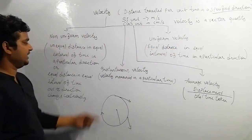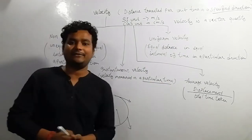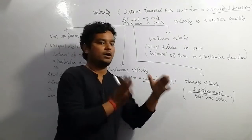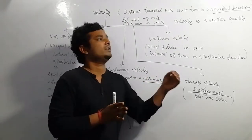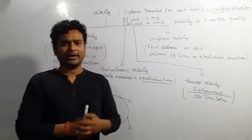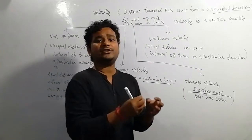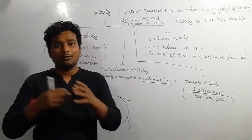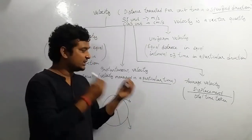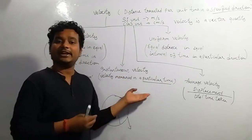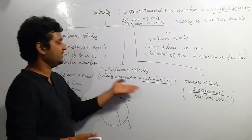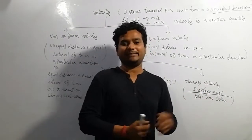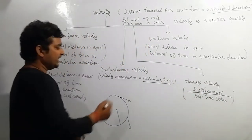Instantaneous velocity is the velocity measured at a particular time instant. If a body is moving with different velocities over one hour, the velocity at exactly 5 seconds is the instantaneous velocity at that instant. Similarly, the velocity at exactly 10 minutes is the instantaneous velocity at that point. That is called instantaneous velocity.